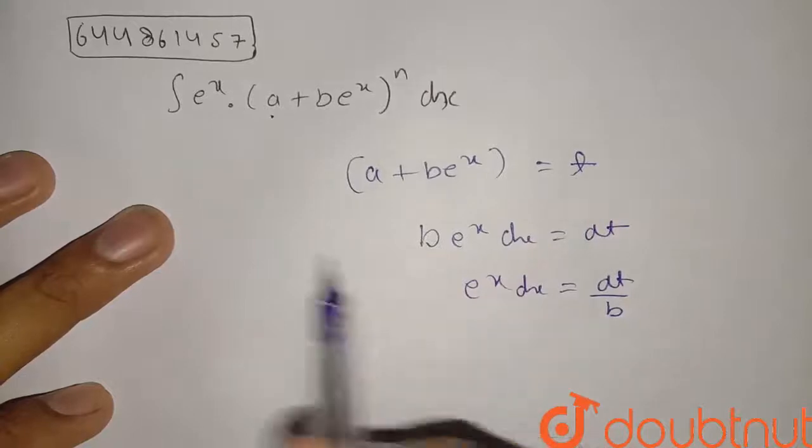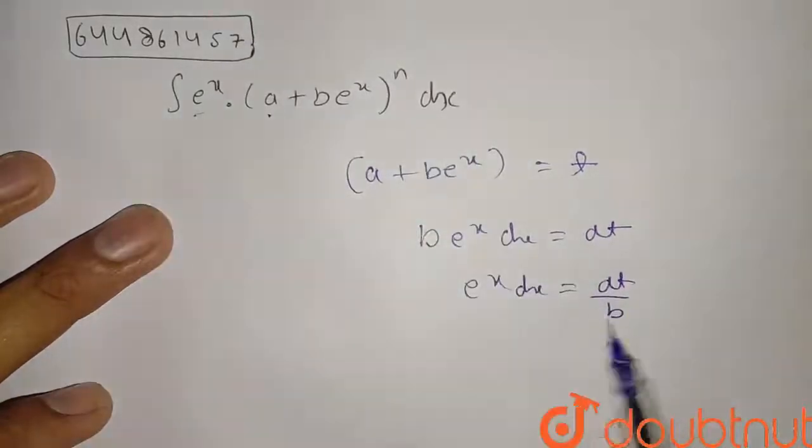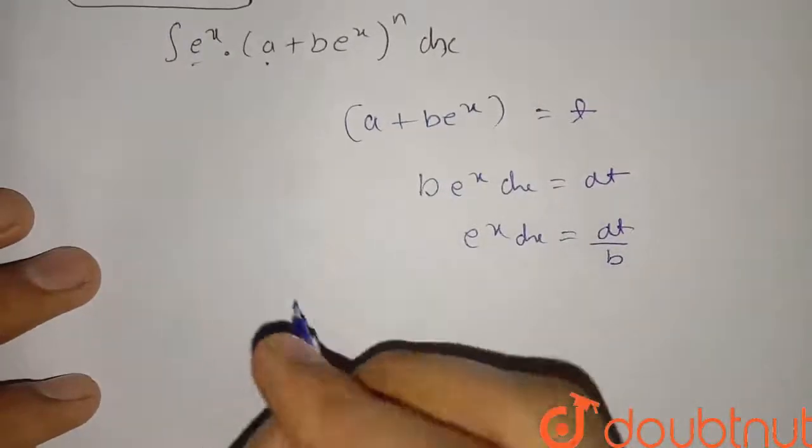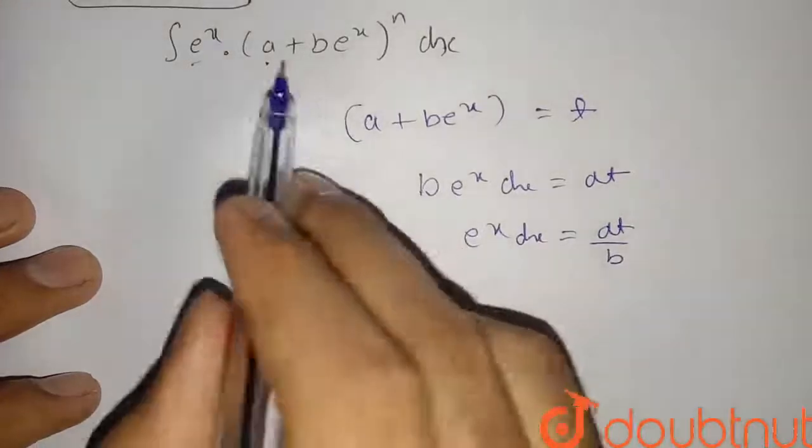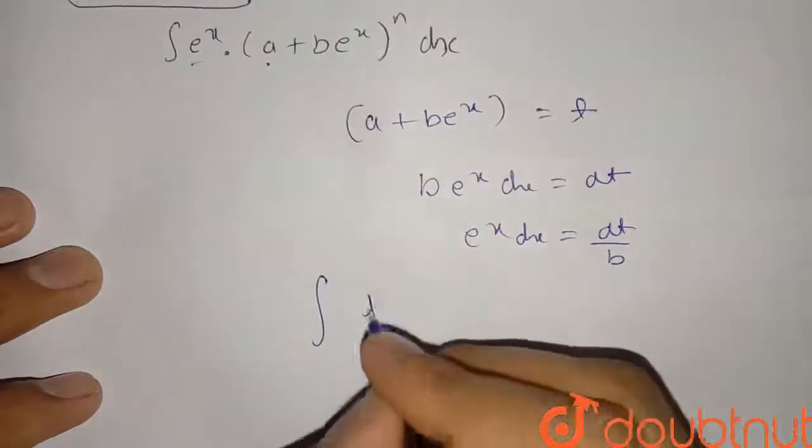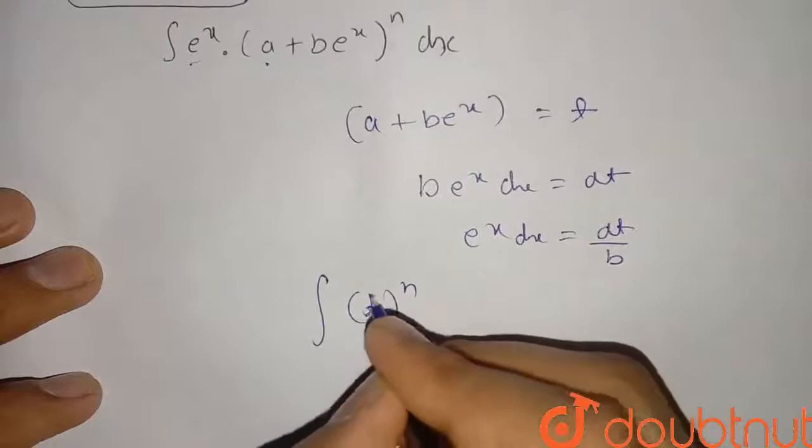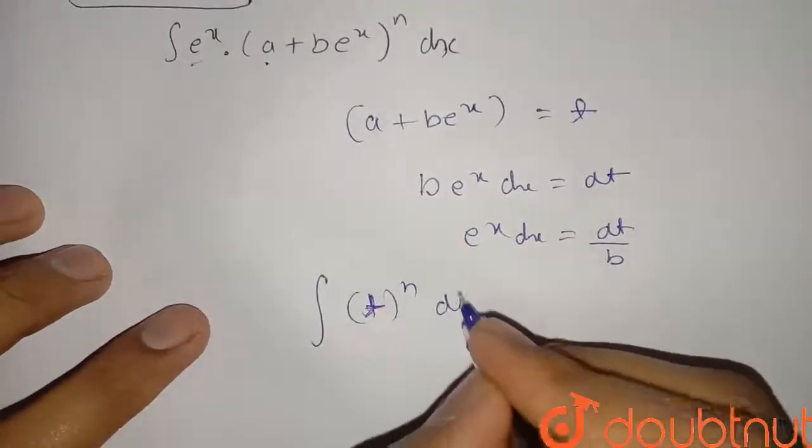Clearly we can see we can replace this e raised to x into dx with dt by b. So it will make our integration easy and this value is t, so t raised to n and other things will be dt upon b.